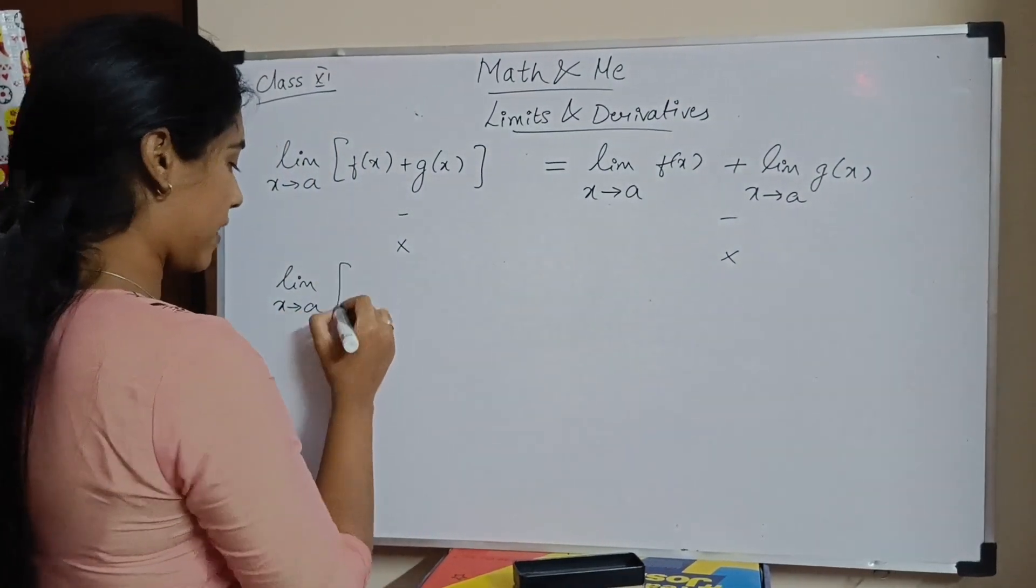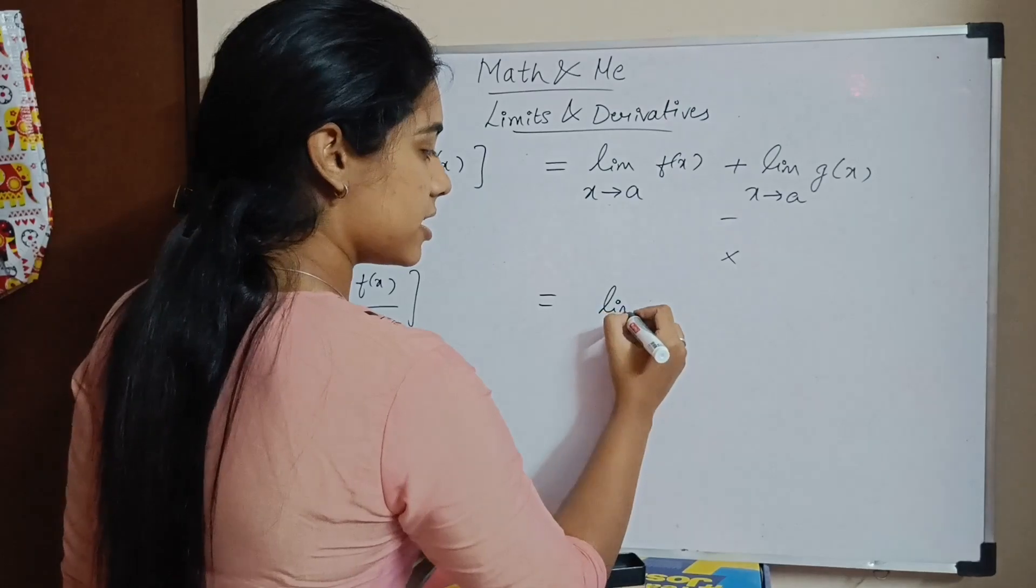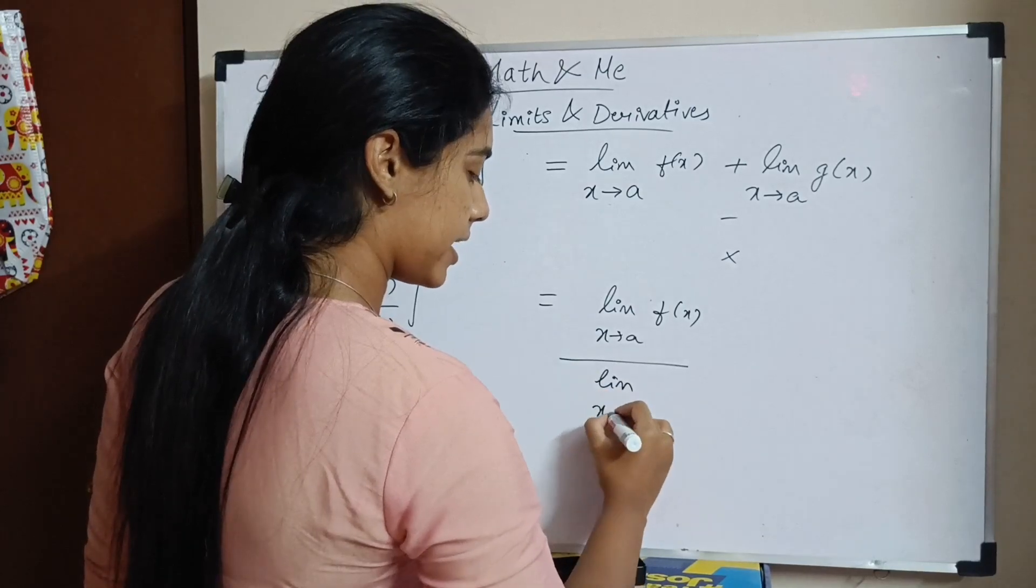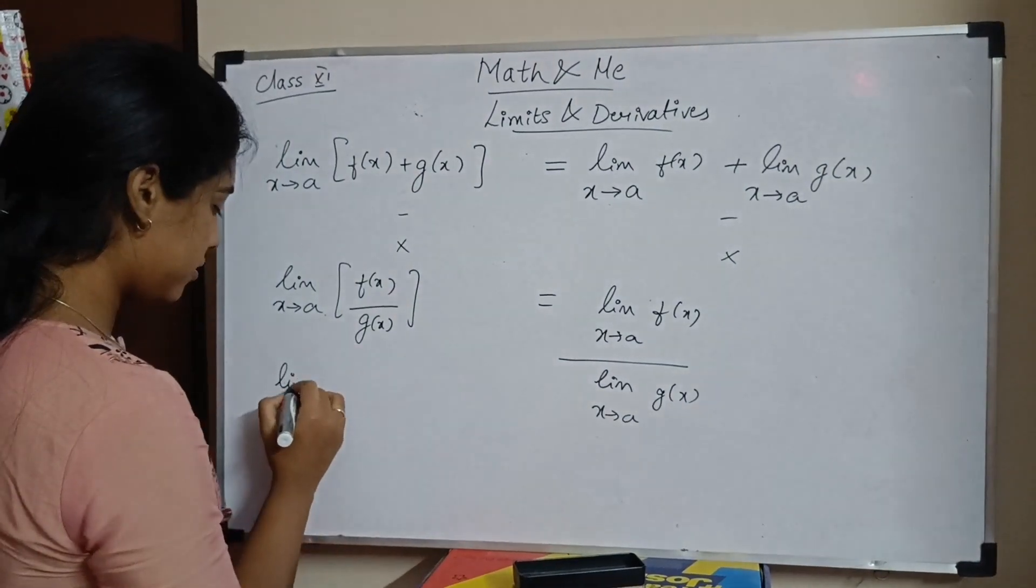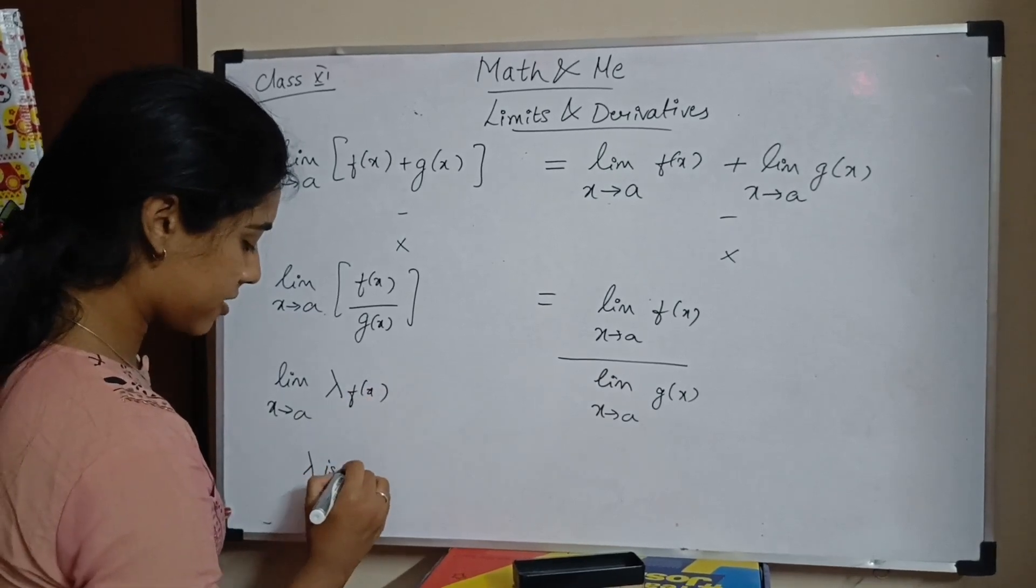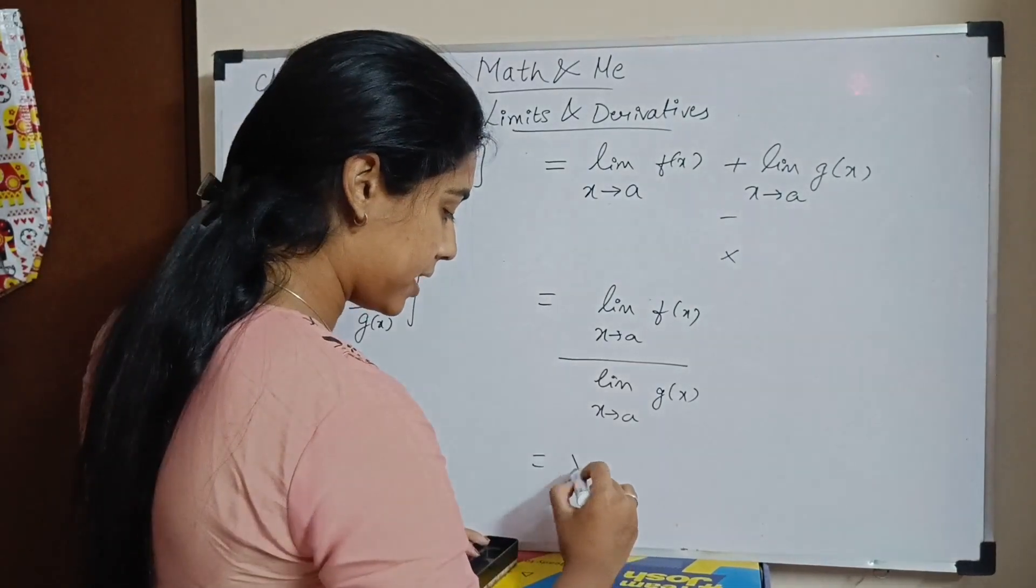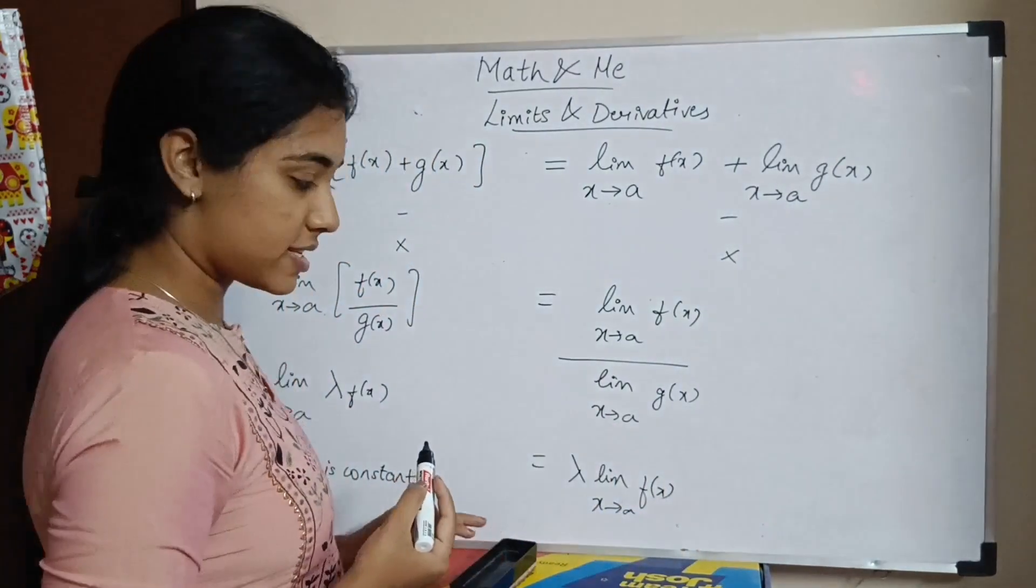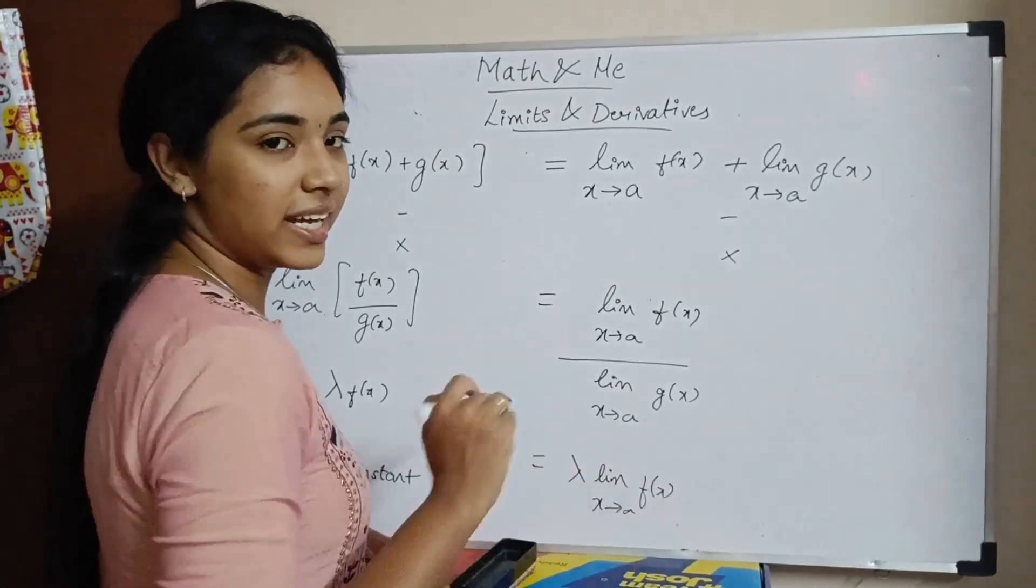Limit x tends to a f of x divided by g of x can also be written as limit x tends to a of f of x divided by limit x tends to a of g of x. There is also one more where limit x tends to a lambda f of x, where lambda is some constant. Lambda can be taken outside. Lambda limit x tends to a of f of x. Basically lambda is independent of x. So we can very well take it outside the limit.